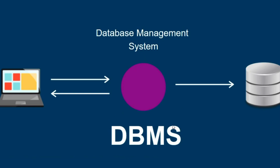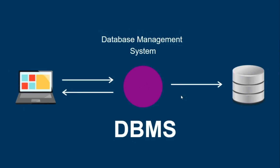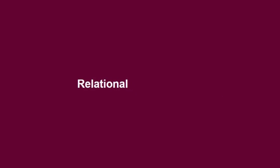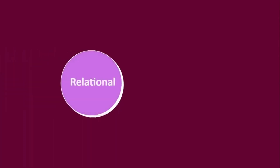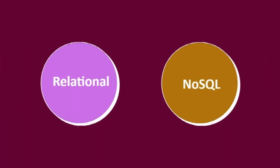This is why the Database Management System is used — it is also software that manages the database. Now, we have two types of databases. One is a relational database, and the other is NoSQL — also called a non-relational database or No Structured Query Language database.